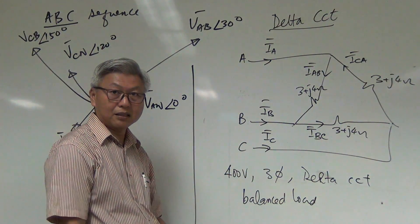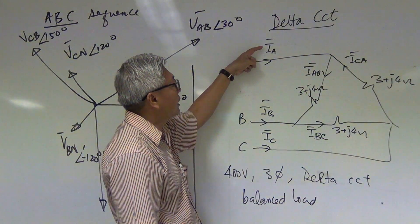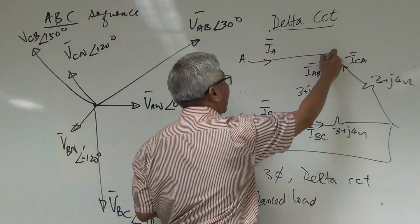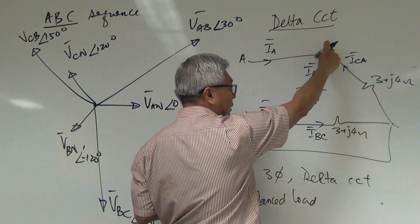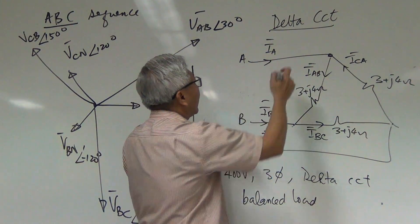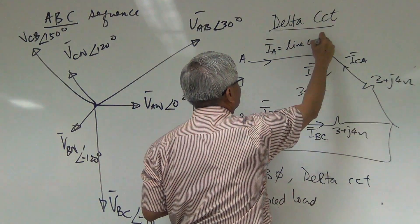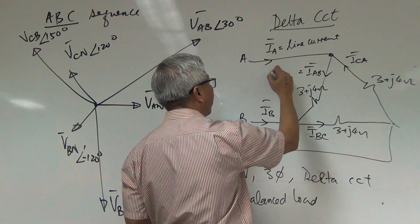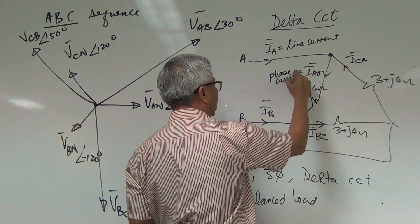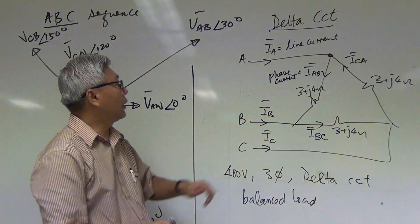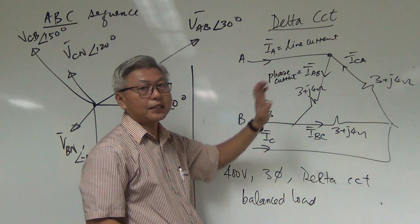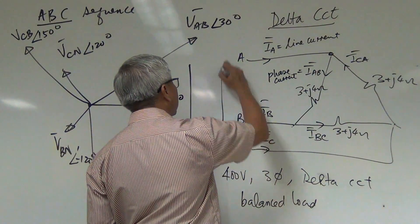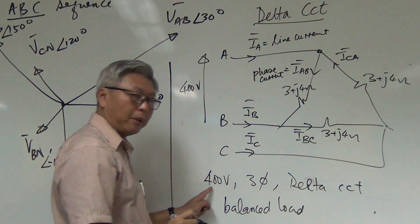Ia and Iab are different currents — they are not the same. At this junction, you have Ia and some of it goes to Iab. Ia is called the line current, and Iab is called the phase current. For a delta circuit, the line current and the phase current are not the same, as we'll find out.